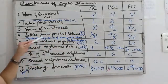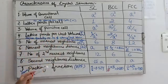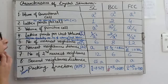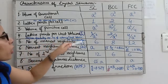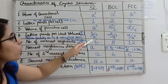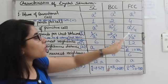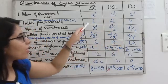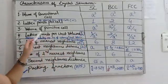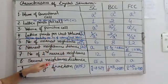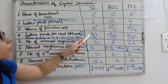The next property is lattice points per unit volume, denoted by rho-n, also called atomic density, or in terms of atoms, number of atoms per unit volume. Its value for simple cubic is 1/a³, for body centered cubic is 2/a³, and for face centered cubic is 4/a³. You can see that this is the reciprocal of the primitive cell volume — if you take the reciprocal of the primitive cell volume, you get the atomic density or number of atoms per unit volume.